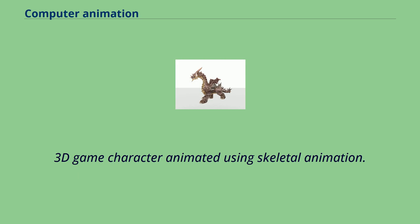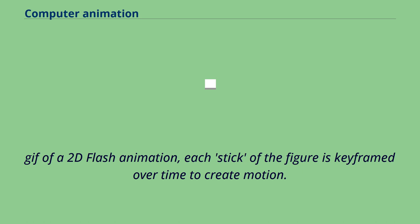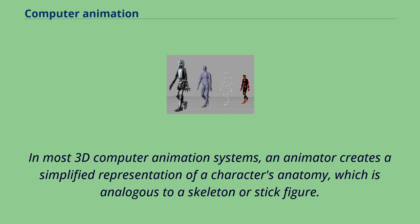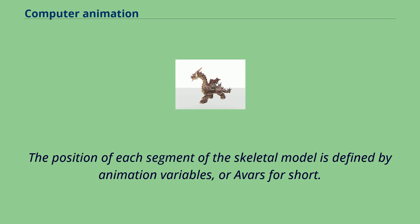In most 3D computer animation systems, an animator creates a simplified representation of a character's anatomy, which is analogous to a skeleton or stick figure. They are arranged into a default position known as a bind pose, or T-pose. The position of each segment of the skeletal model is defined by animation variables, or AVARs for short.